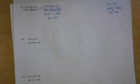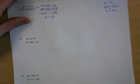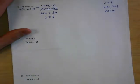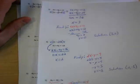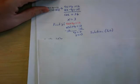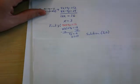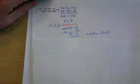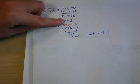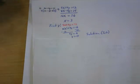Finishing that problem: I used 4x plus 4y equals 12, substituted 3 in for x, and ended up with y equals 0. So the solution is (3, 0).